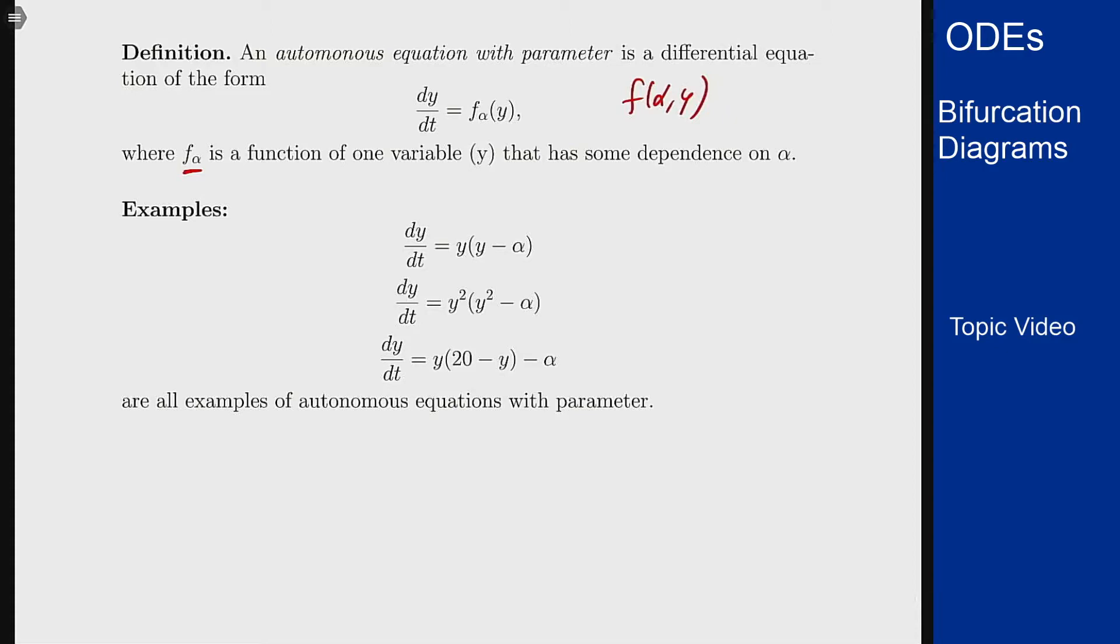Here are some examples of equations that fit this model. You have y(y - alpha), y squared times (y squared - alpha), and this last one here fits the harvesting model discussed on the previous page. Same idea, we just picked k to be 20.